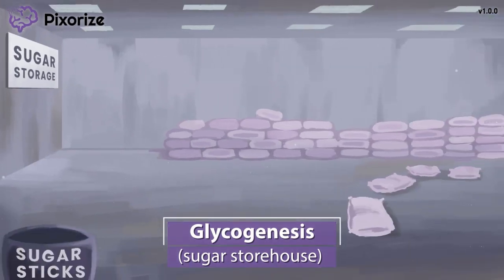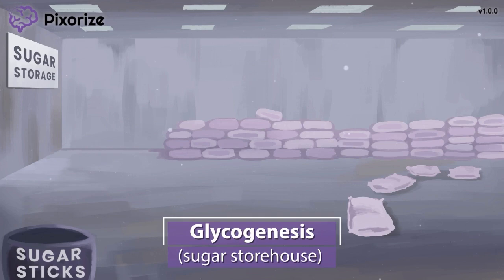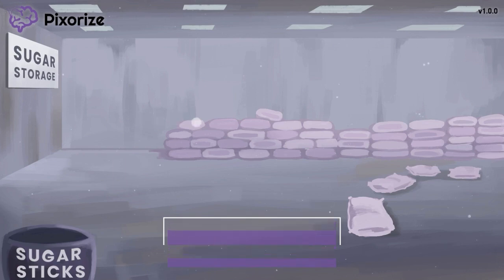Now let's tackle glycogenesis. Genesis refers to the generation of something, and glycogen refers to itself. So glycogenesis literally means the genesis of glycogen — in other words, it's the pathway by which glycogen itself is generated. It probably would have made more sense to call this glycogenogenesis, but just glycogenesis seems to roll off the tongue better.